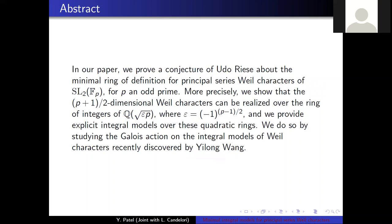So in our paper, we prove a conjecture of Udo Ries about the minimal ring of definition for principal series Weil characters of SL2 of Fp for p an odd prime. More precisely, we show that the (p+1)/2 dimensional Weil characters can be realized over the ring of integers of Q adjoined with square root of epsilon p where epsilon is plus or minus one. And we provide explicit integral models over these quadratic rings.